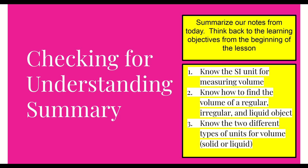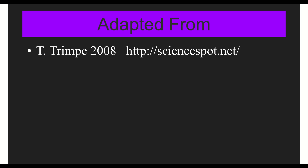Summary time. Review our three purposes: what is the SI unit for measuring volume — there are two of them; know how to find the volume of a regular, irregular, and liquid object; and know the two different types of units — solid or liquid. Purposes one and three go together, so make sure to address that in your summary. Thanks for watching this video on finding volume in the metric system. Some slides were adapted from Science Spot by Trimpe.